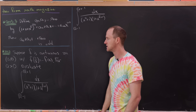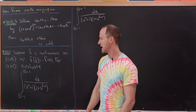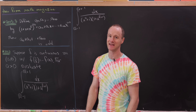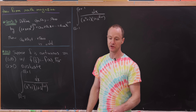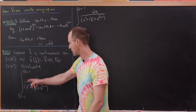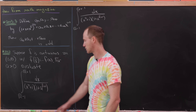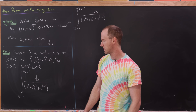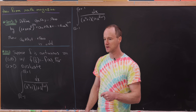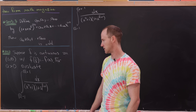Suppose f is a continuous function on the positive real numbers satisfying the condition f(1/x) = −f(x). We want to take a to be a positive real number and evaluate the integral from √2 − 1 to √2 + 1 of 1/((x² + 1)(1 + a^(f(x)))) dx. The value of this integral might depend on a.